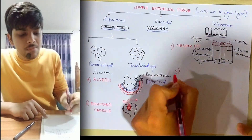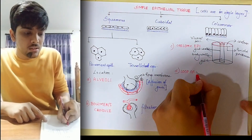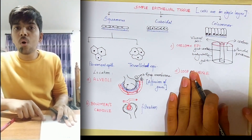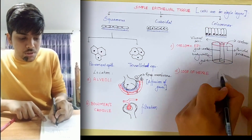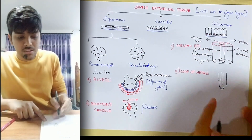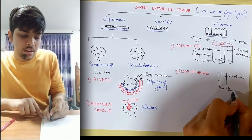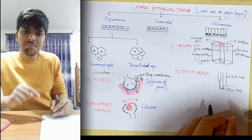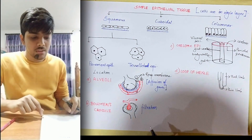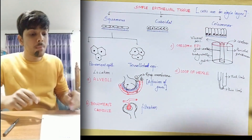D — D for the descending loop of Henle, though that is just a way of remembering it. The loop of Henle is also a part of the nephron found in your kidney. It consists of two parts: the thick limb and the thin limb. The thin limb has a very narrow space inside, so only simple squamous epithelium can fit inside it — that is why simple squamous epithelium is found in the thin limb of the loop of Henle.